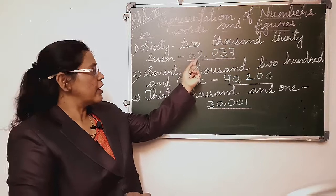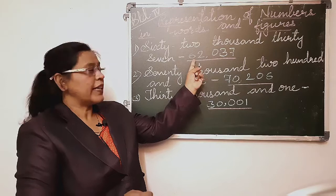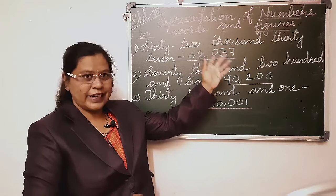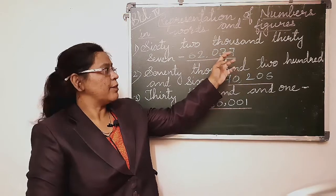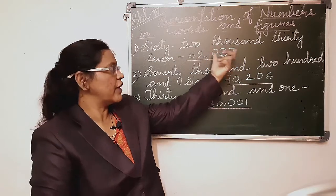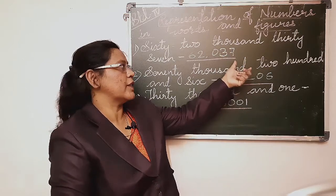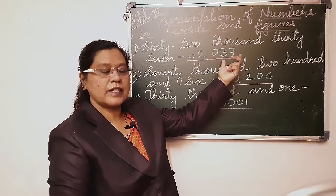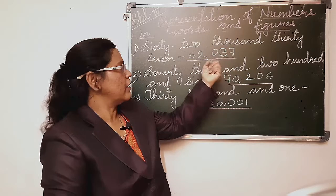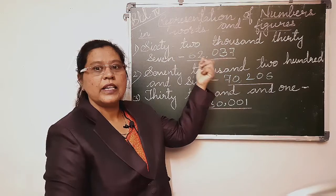What does 62,037 mean? It means we have sixty — ten thousands, and two thousands, so no hundreds value is there. The 37 means thirty plus seven — tens and units place together. In tens we have thirty and in units we have seven, so it is 37. Together it is 62,037.